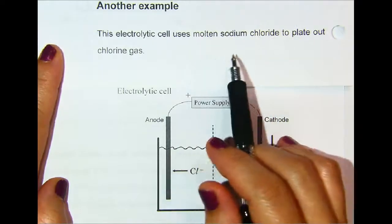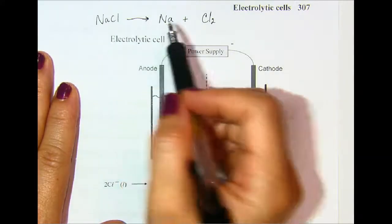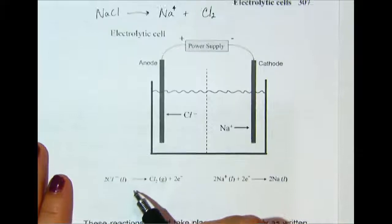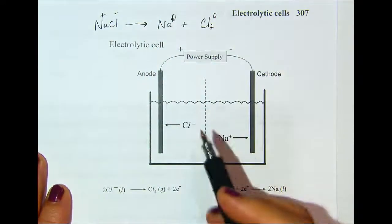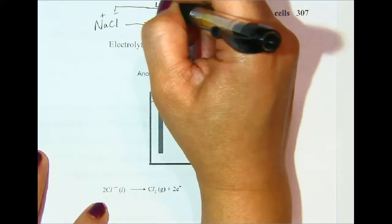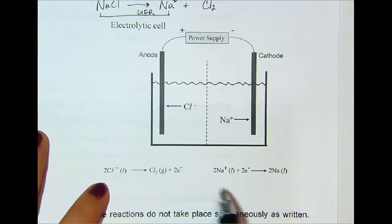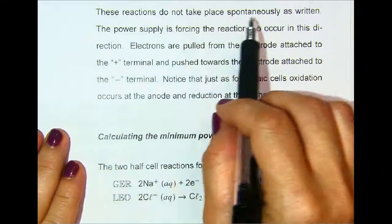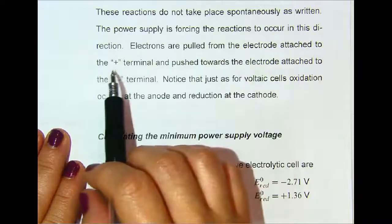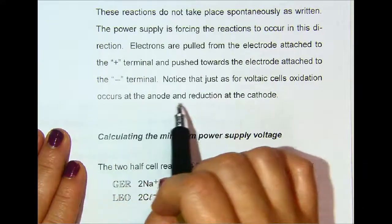Here's another example: this electrolytic cell uses molten sodium chloride to plate out chlorine gas. Molten sodium chloride yields sodium metal and chlorine gas. The oxidation states are plus one and minus one going to zero and zero. So the half reactions: chlorine is the oxidation (Leo) part of this reaction since the oxidation number increases, and sodium is the reduction (Ger) part since the oxidation number decreases. These reactions do not take place spontaneously as written — the power supply is forcing the reactions to occur in this direction. Electrons are pulled from the electrode attached to the positive terminal and pushed toward the electrode attached to the negative terminal. Just as for voltaic cells, oxidation occurs at the anode and reduction occurs at the cathode.